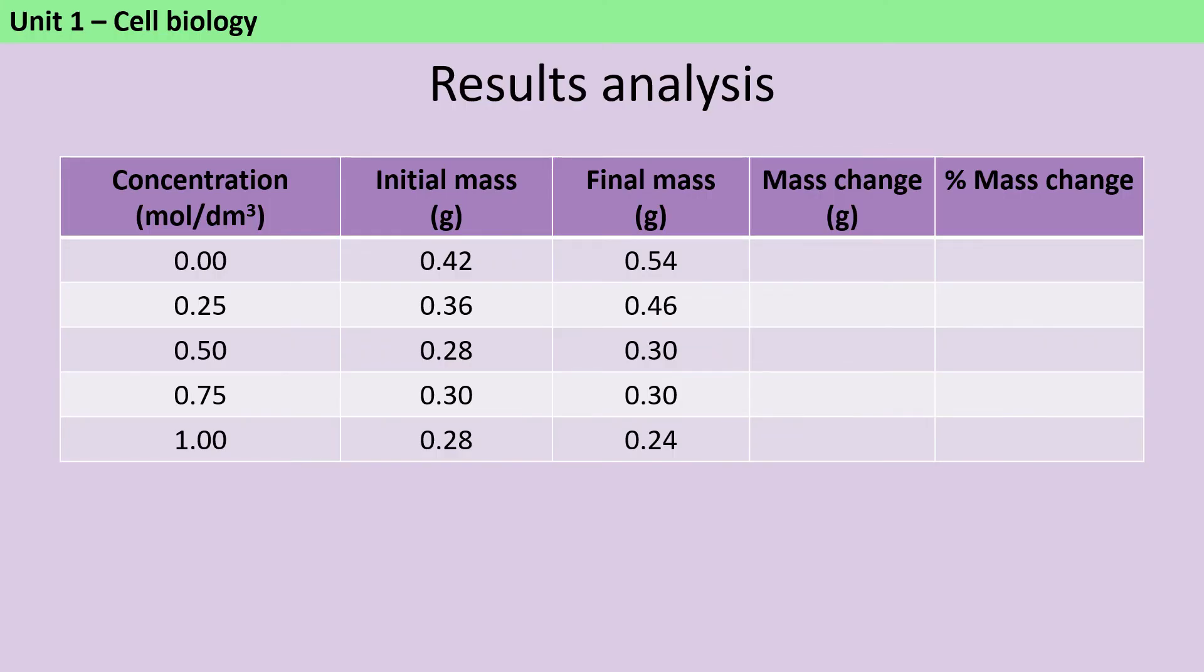In terms of results analysis, the first thing that you're likely to be asked to do is to work out the change in mass for each piece of potato. So this is just the difference between the final mass and the initial mass. So if I look at my first piece of potato that was in the pure water, that has increased in mass by 0.12 grams. And because I'm going to have both increases and decreases in this experiment, I'm going to indicate that more clearly by putting a plus sign in front of my number.